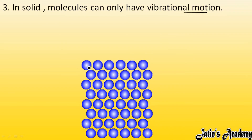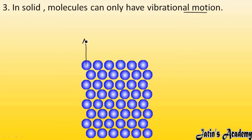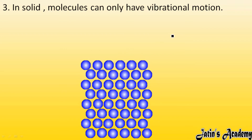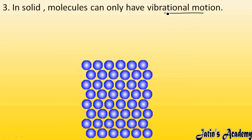Third point: in solids, molecules can only have vibrational motion. Molecules are only vibrating about their mean position — they are not moving here and there; they are just vibrating about their mean position. This type of motion is called vibrational motion.